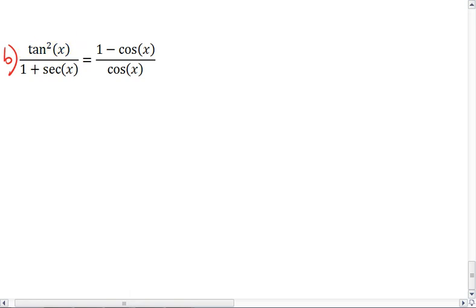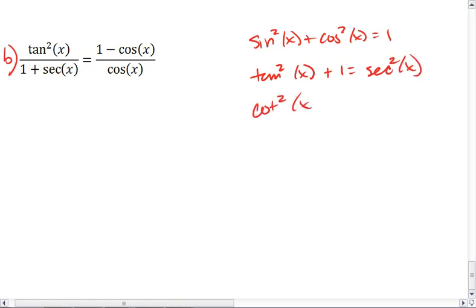It tells us we're going to want to use one of our Pythagorean identities. The one we want to use, let's look at all of them. We have sine squared plus cosine squared equals 1. We have tan squared plus 1 equals secant squared. And cotangent squared plus 1 equals cosecant squared. So we want to use this middle one with tan squared.